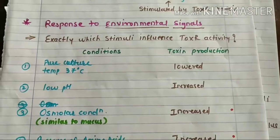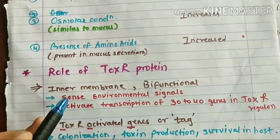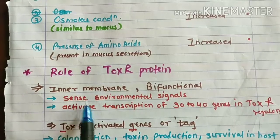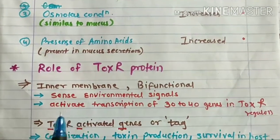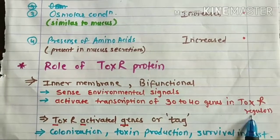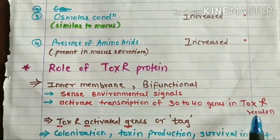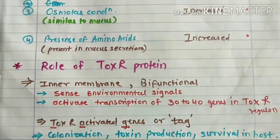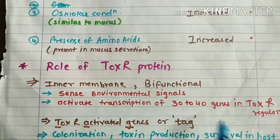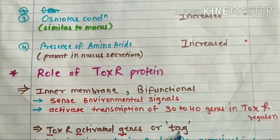Now let's see what the ToxR protein is and what its role is. It is an inner membrane protein, and it is a bifunctional protein — it is in the inner membrane and performs two functions. The first function is that it senses the environmental signal. Whatever signals are coming from the environment, it will sense the environmental signal and activate transcription of 30 to 40 genes in the ToxR regulon. So it senses the signal and activates transcription of the ToxR regulon. These genes which are in the ToxR regulon are known as ToxR-activated genes, or TAG.